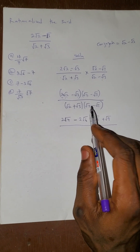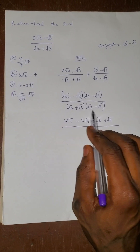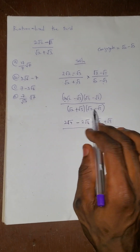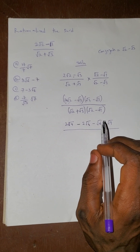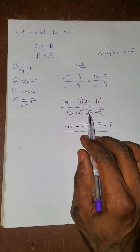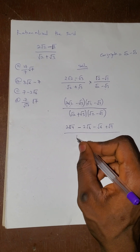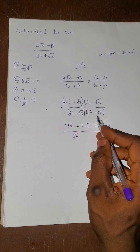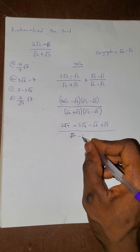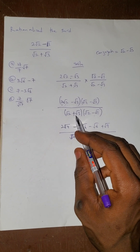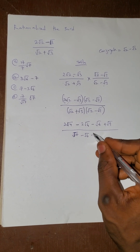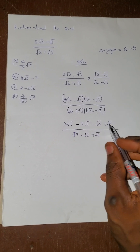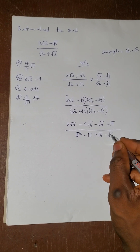I'll show a shortcut after the normal method. √2 times √2 gives √4; √2 times minus √3 gives minus √6; then √3 times √2 gives plus √6; and √3 times minus √3 gives minus √9.